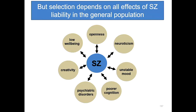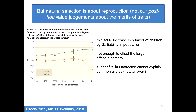However, selection depends upon all the effects of the risk alleles in the population. Average schizophrenia liability increases risk of psychiatric disorders and maybe creativity, but it's also associated with poorer cognition, unstable mood, neuroticism, openness, and low well-being. Selection depends on the net effect. Natural selection really boils down to how many children you have that survive to themselves have children - it doesn't rely on us making a value judgment about whether it's great to be creative. It's about numbers of children.